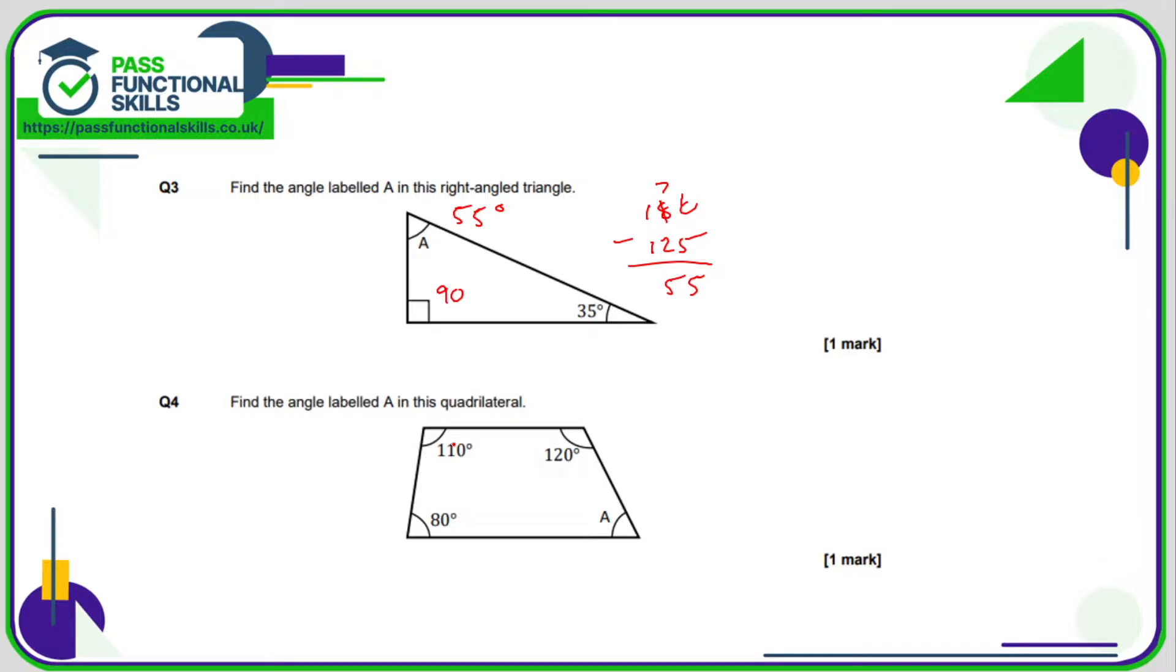Question four is a calculator question. If we add these angles together and subtract them from 360 degrees, or 360 minus 120 minus 110 minus 80, that tells us angle A is 50 degrees.